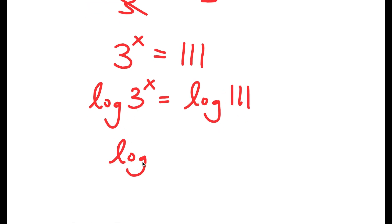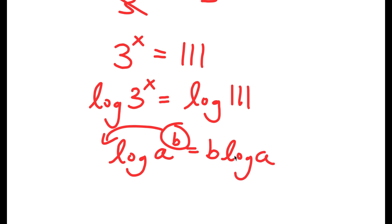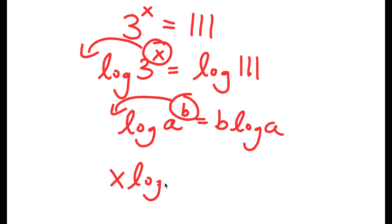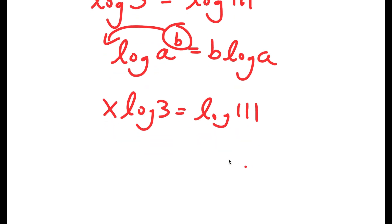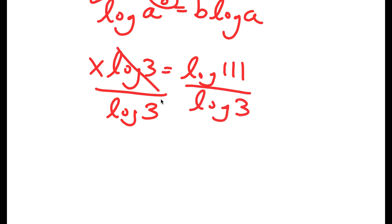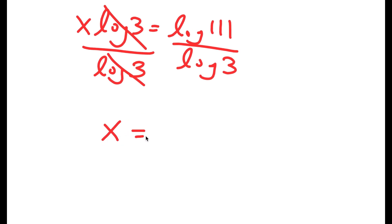If I have something in the form log a to the power of b, I can move this exponent b to the front, so this equals b times log a. So in this case, I have log 3 to the power of x, and I can move x to the front. I get x times log 3 is equal to log 111. If I divide both sides by log 3, these two cancel out, and I get x is equal to log 111 over log 3.